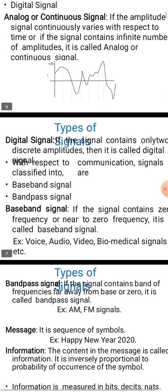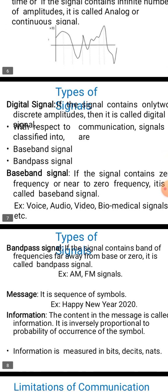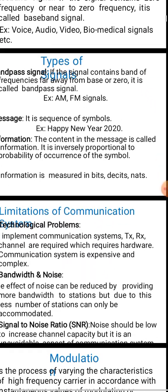Telephone lines provide good voice-grade communication over the frequency range of 300 to 3400 Hz and are mainly used in voice communication. The second wire line channel type is coaxial cable.